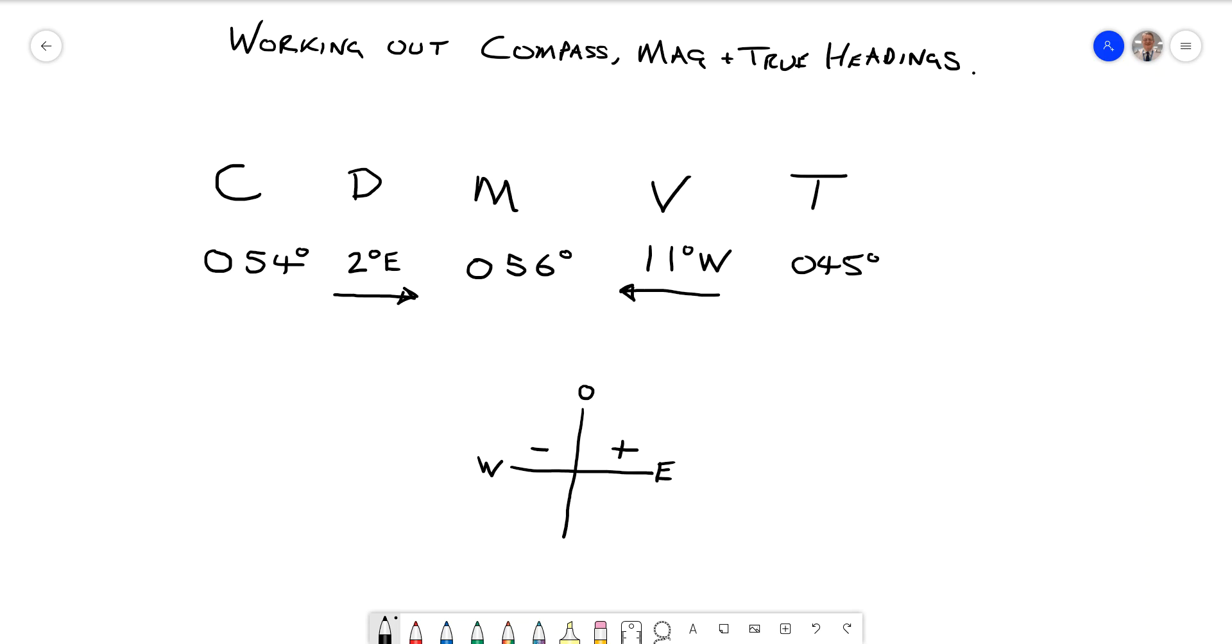For a true heading, where we are on the planet with 11 degrees variation, for a true heading of 045, I would need to follow 054 on my compass, which allows for the 2 degrees east deviation as well between the compass and the magnetic heading. Easy peasy, lemon squeezy.